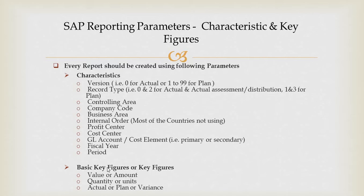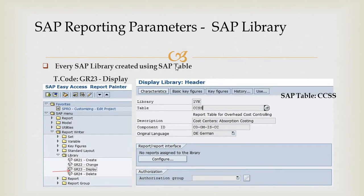We have basic key figures and key figures, and these are two different things. These contain values — amount, quantity, or units — covering planned actuals, plan, or variance.